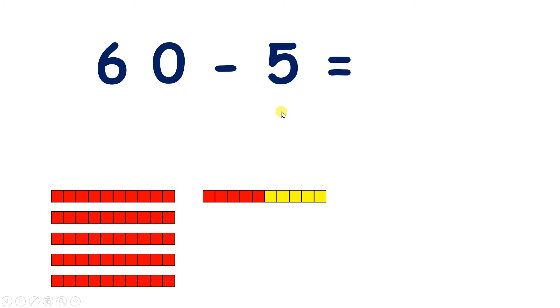Now if I know that 5 add 5 makes a number bond to 10, rather than thinking of having 1, 2, 3, 4, 5, 6 tens, instead we can think of having 5 tens, like the 5 red lines of 10 we can see here, and another 10 made up of 5 reds and 5 yellows.